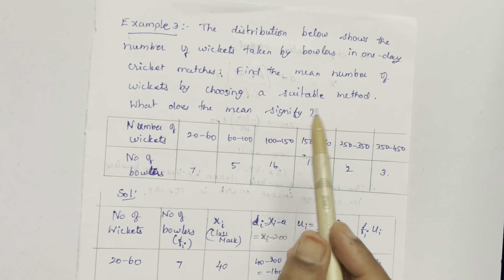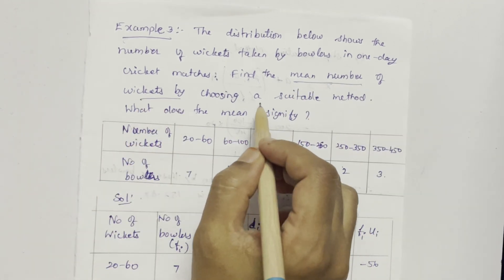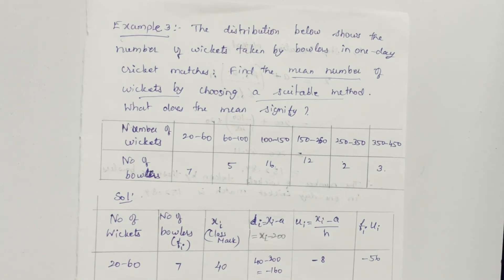Our question is to find the mean number of wickets by choosing a suitable method. What method we have to choose?